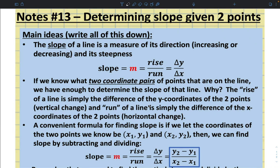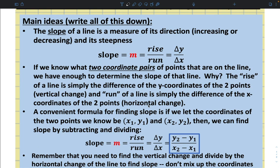A convenient formula for finding slope is if we let the coordinates of the two points we know be (x1, y1) and (x2, y2). Then we can find slope by subtracting and dividing. So here, we add another thing to our equation: y2 minus y1 over x2 minus x1 is equal to our slope.